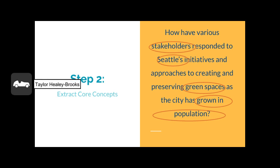In step two, we're extracting the core concepts. Looking at the research question again, I singled out some words that stood out to me. We want to find information about green spaces in Seattle, but we probably want to know some other information as well — we want to know about the stakeholders' response to green spaces and the effects on an ever-growing population. So I selected stakeholders, Seattle, green spaces, and growth in population as our core concepts.